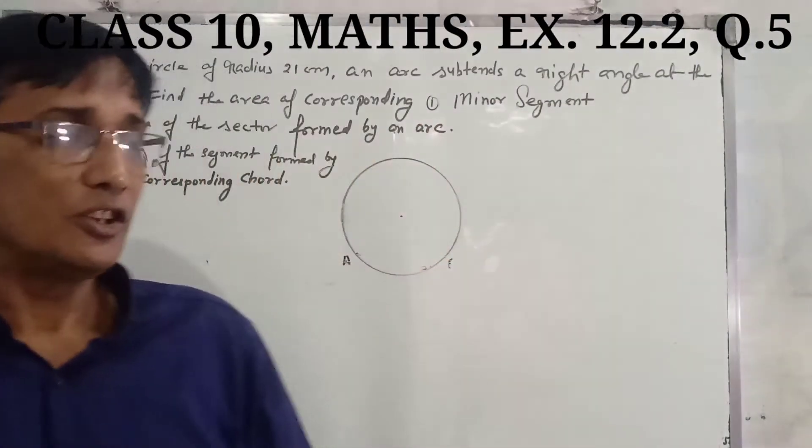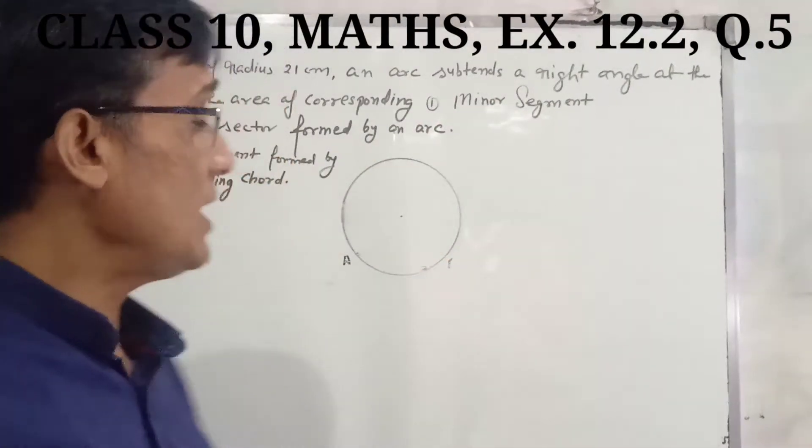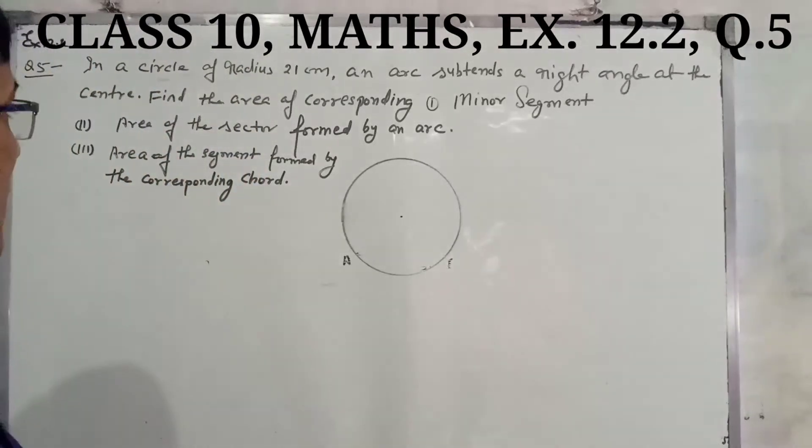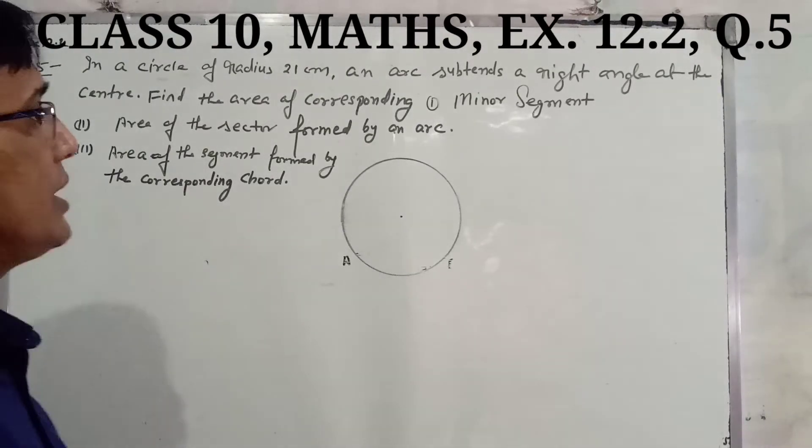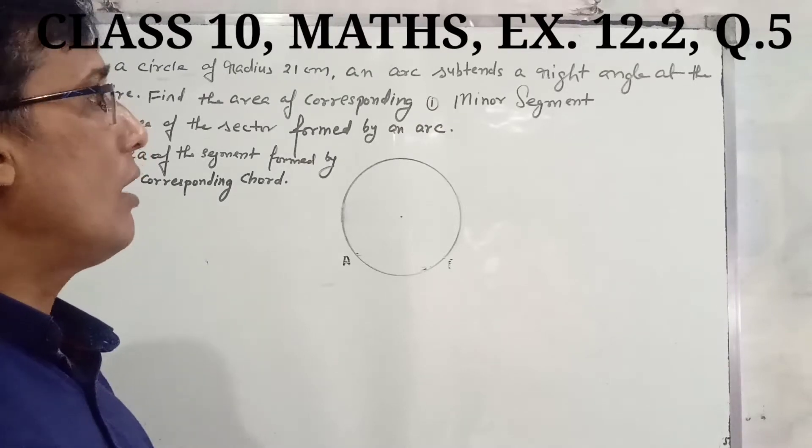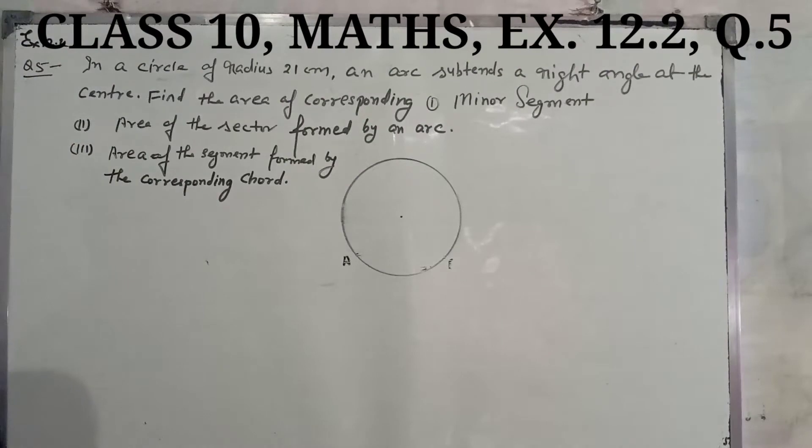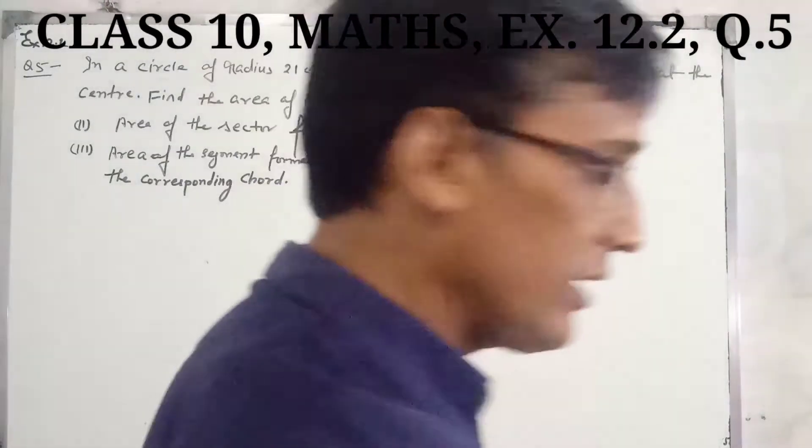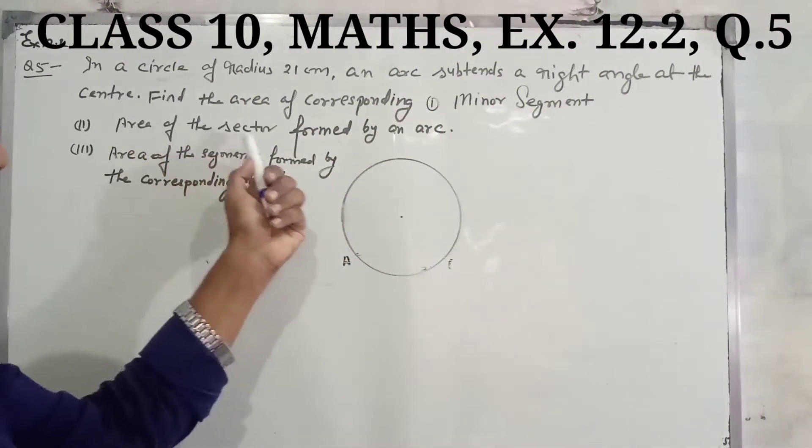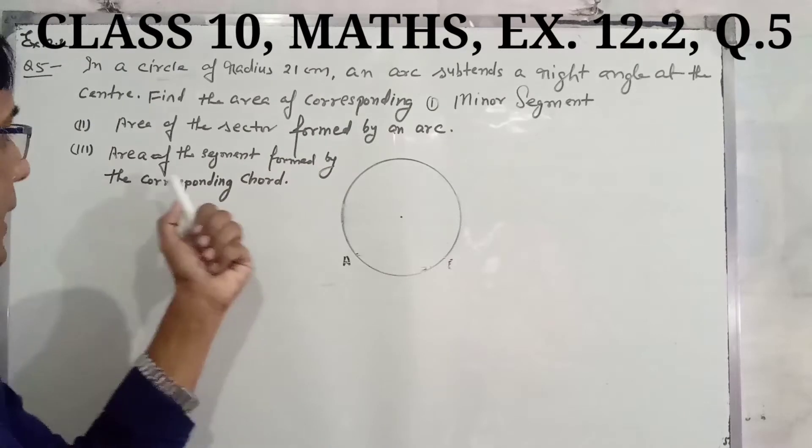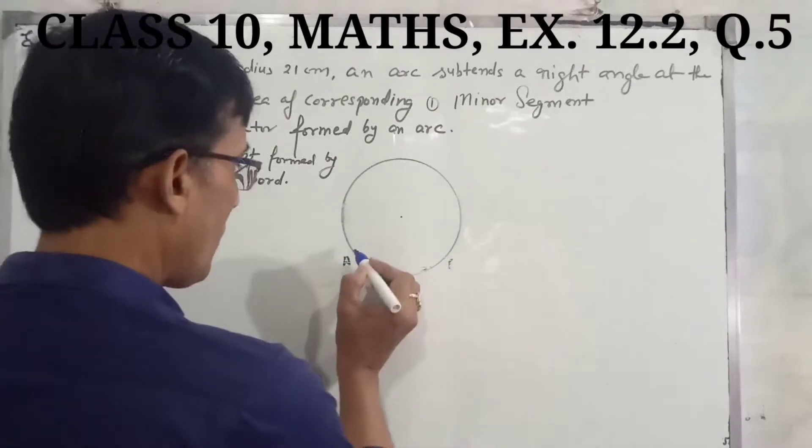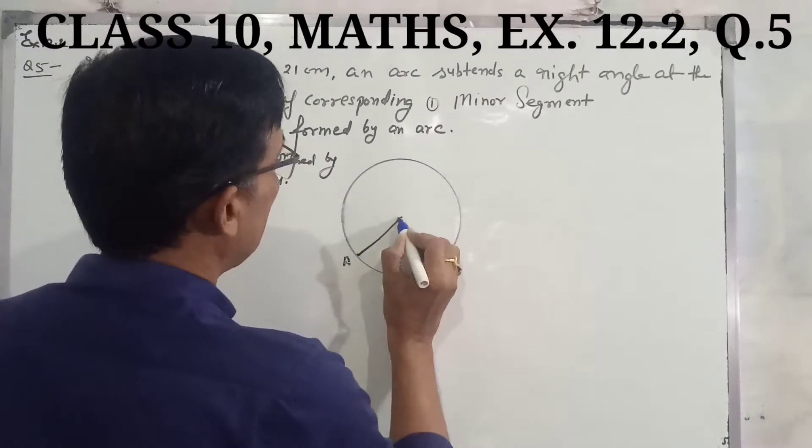Namaskar students, Exercise 12.2 Question number 5. In a circle of radius 21 centimeters, an arc subtends a right angle at the center. Find the area of the corresponding minor segment, area of the sector formed by the arc, and area of the segment formed by the corresponding chord.